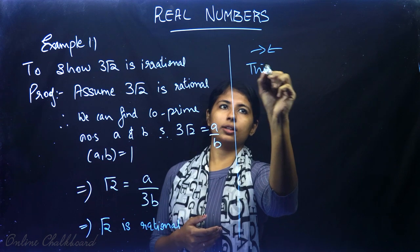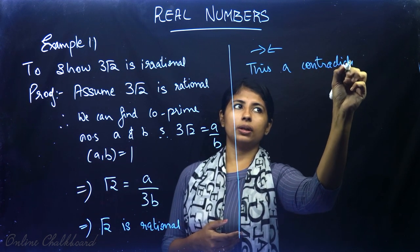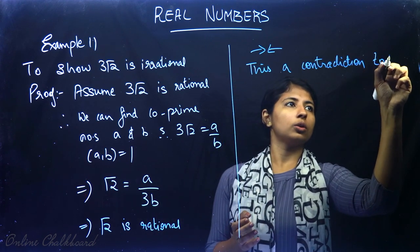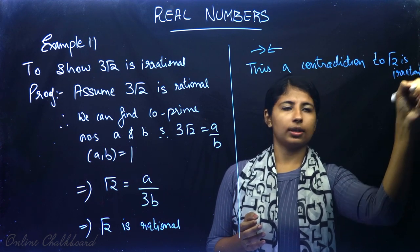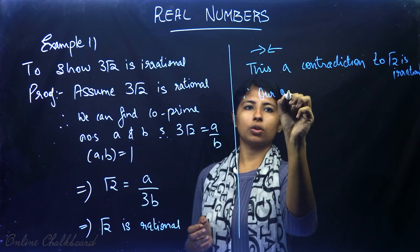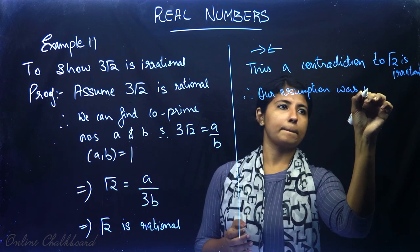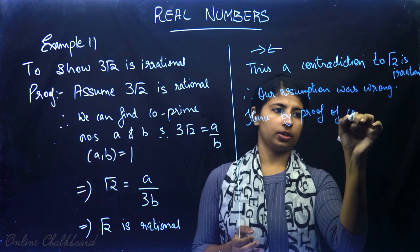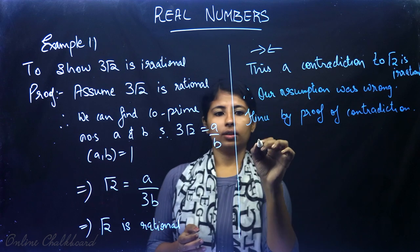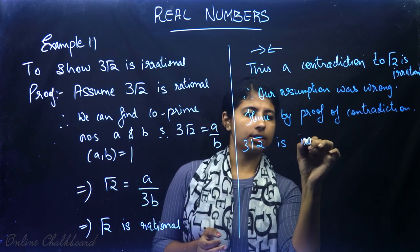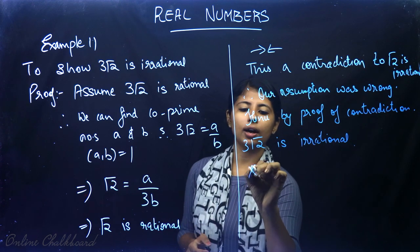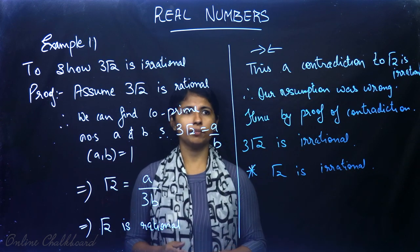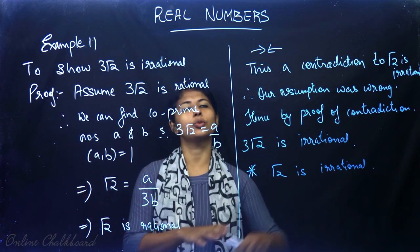But √2 is irrational, so this is a contradiction. The contradiction arose because we assumed 3√2 is rational, which contradicts the fact that √2 is irrational. Therefore our assumption was wrong. Hence, by proof of contradiction, 3√2 is irrational. If this question comes for a higher mark, you should also prove √2 is irrational separately using Theorem 1.4.